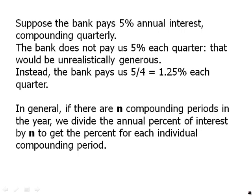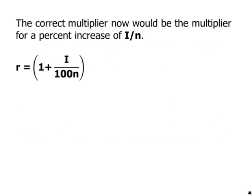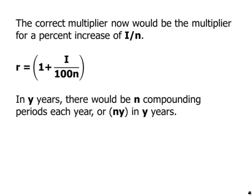The correct multiplier is the multiplier for a percent increase of I divided by N — writing this out algebraically: 1 plus I over 100N. That's our multiplier. In Y years there would be N compounding periods each year, or N times Y total compounding periods. So we're multiplying by that multiplier N·Y times.